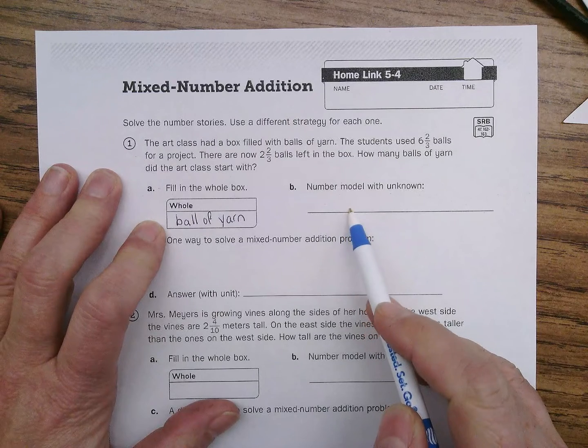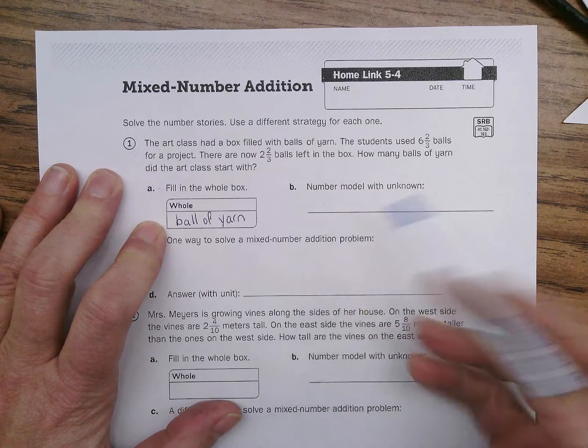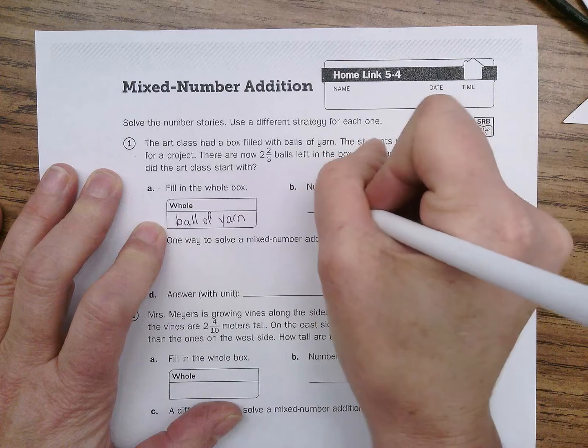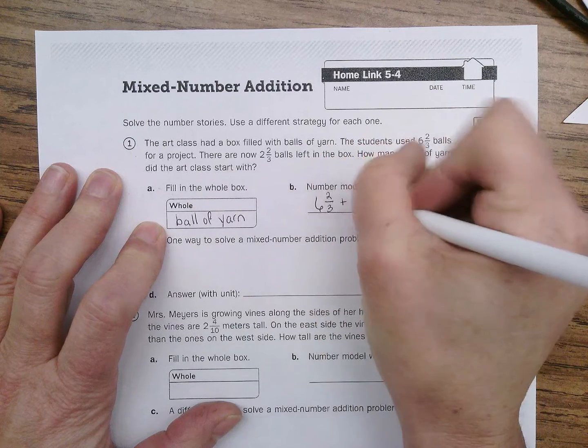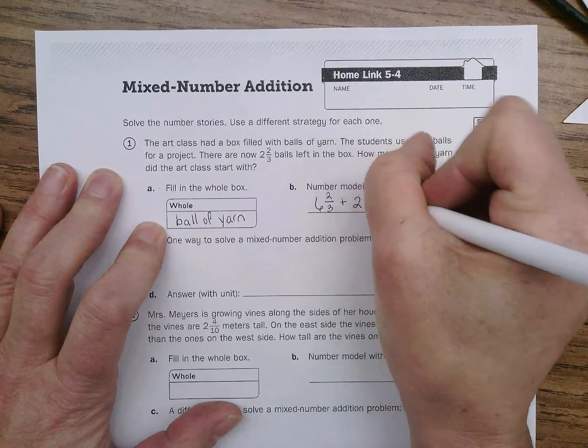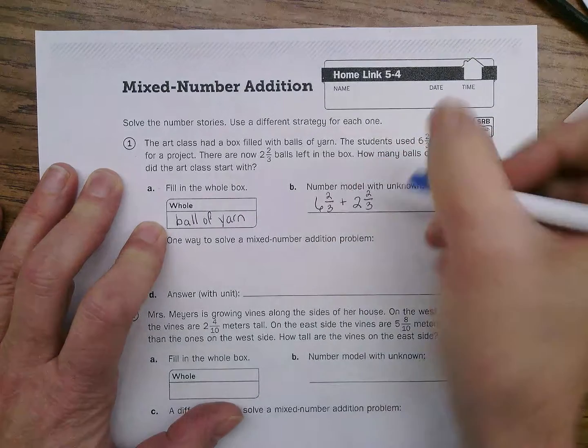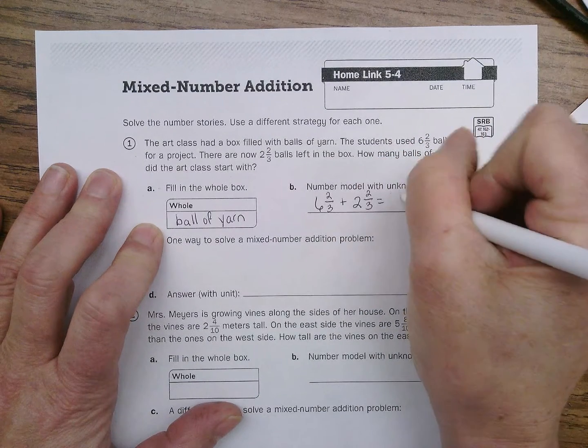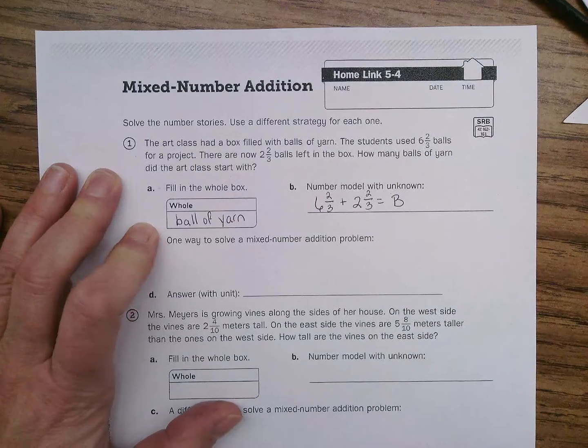So, the number model with the unknown, that's going to be an addition number model. Six and two-thirds plus two and two-thirds equals, and let's just say it equals B. We'll call it B for balls of yarn. That will be our unknown.